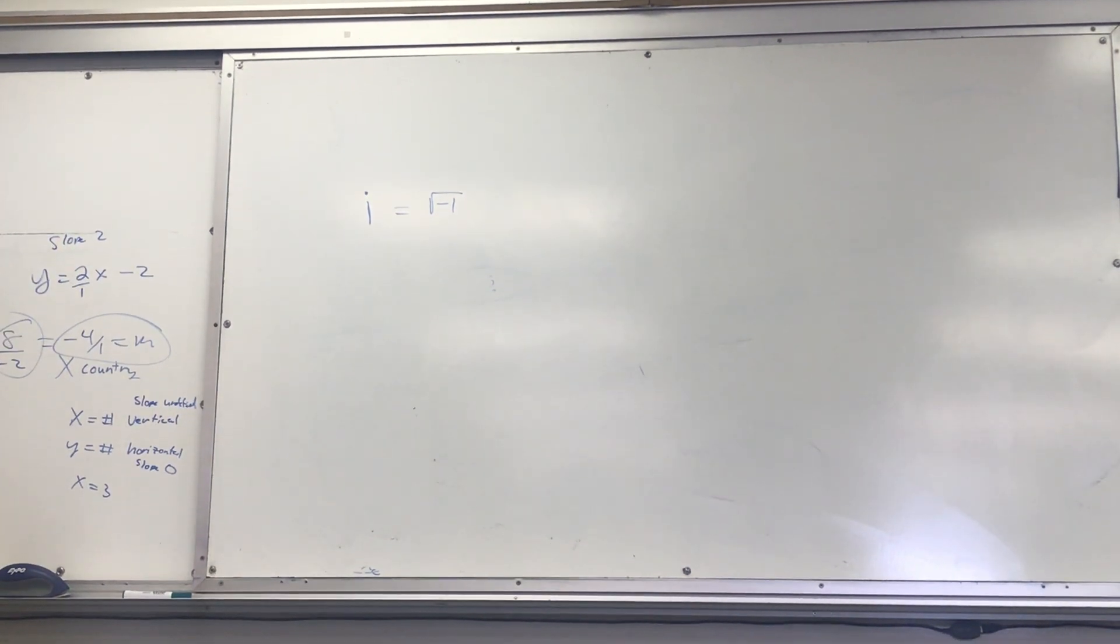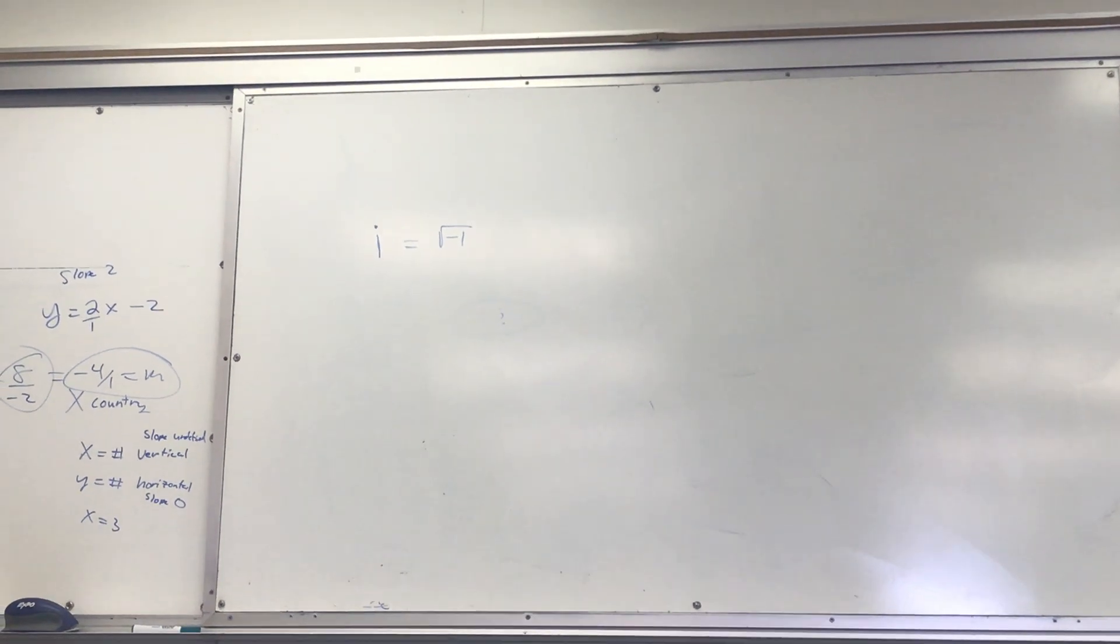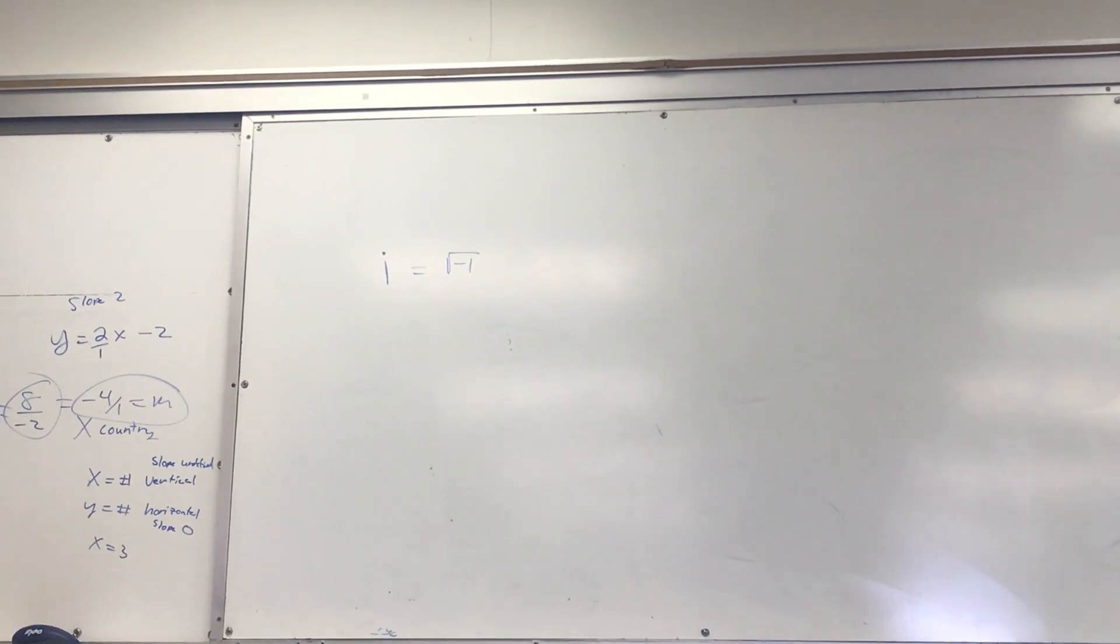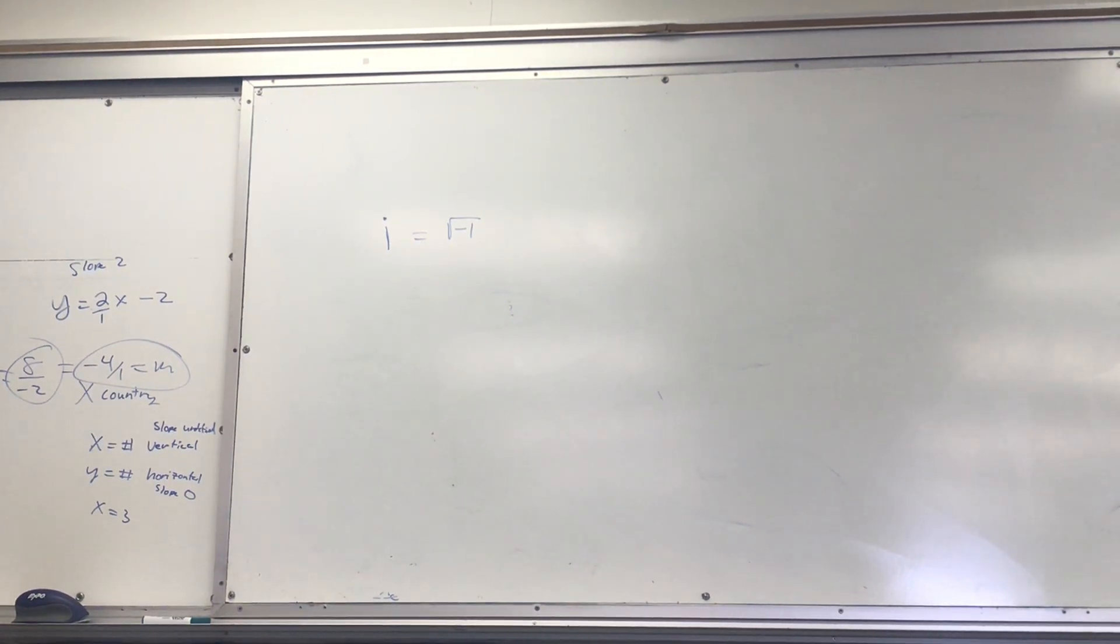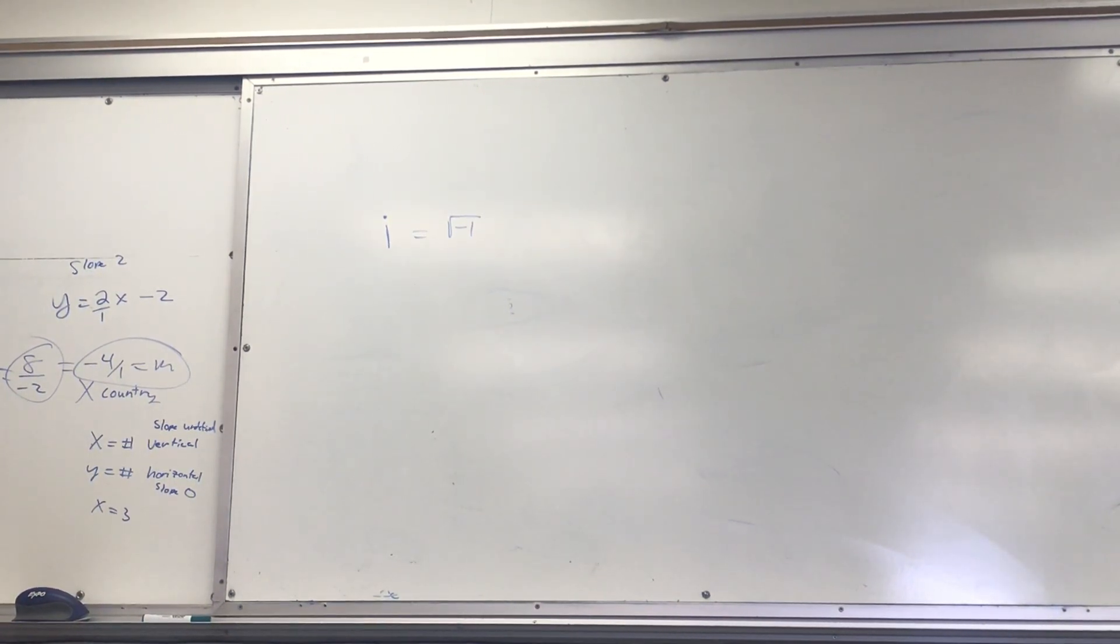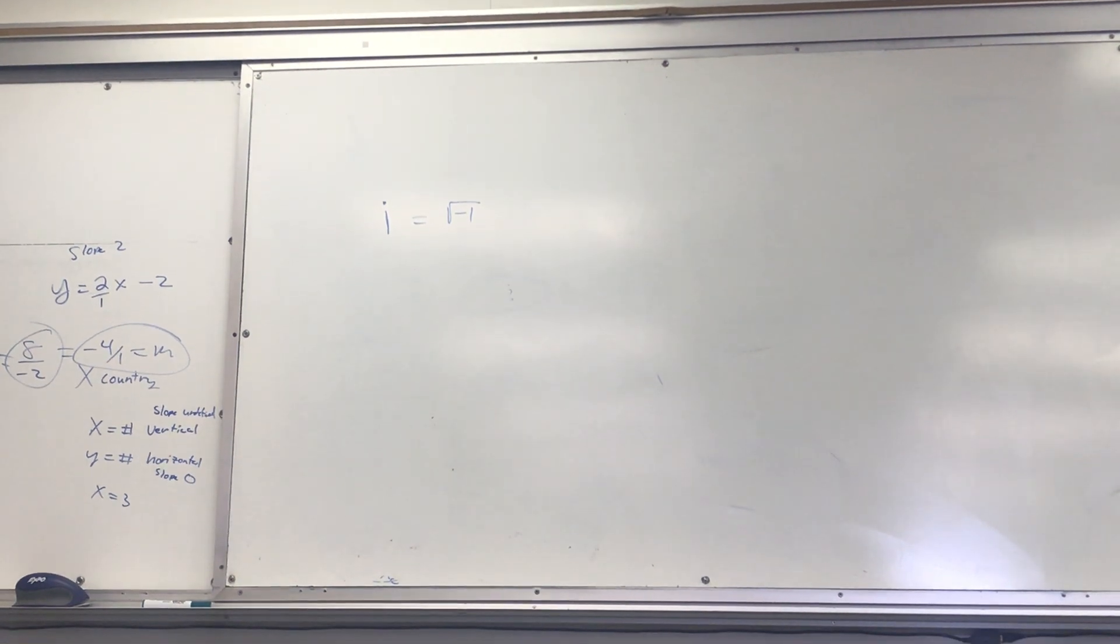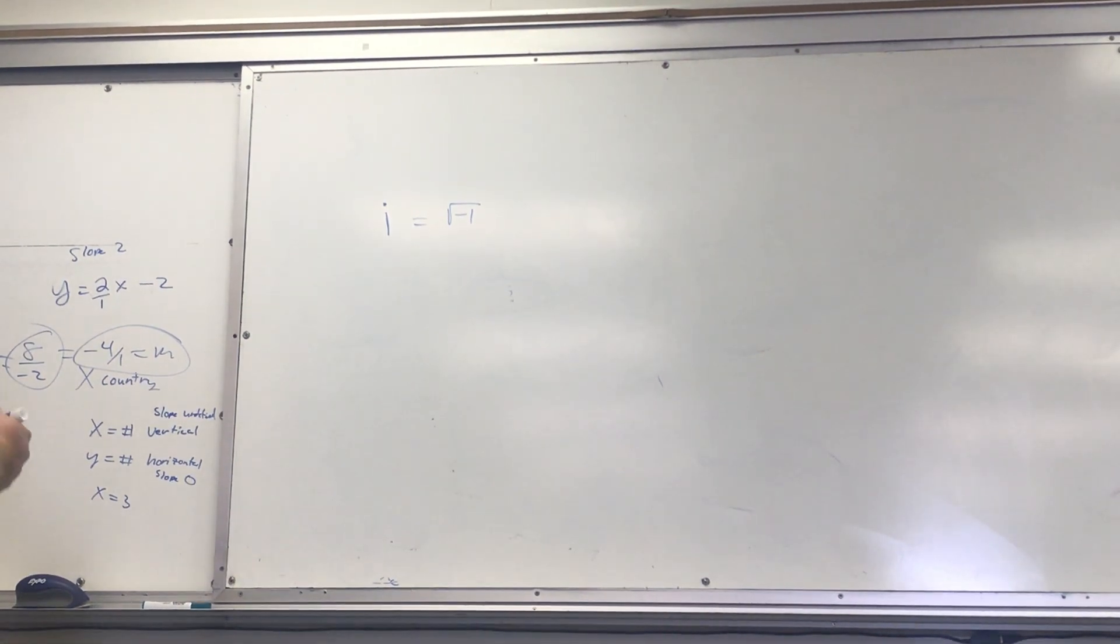You can punch it into your calculator and it'll say non-real answer, non-real solution. If you punch in square root, it'll say undoable or imaginary, or it'll say a bunch of different things. It'll say all kinds of weird things because it doesn't exist.